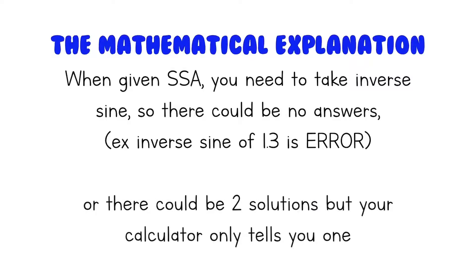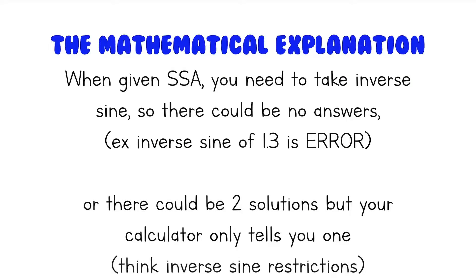Or, there could also be two solutions, but your calculator only tells you one. Think about the inverse sine restrictions — your calculator will only give you an angle between 90 and negative 90 degrees, so if there's another solution, your calculator won't tell you that.